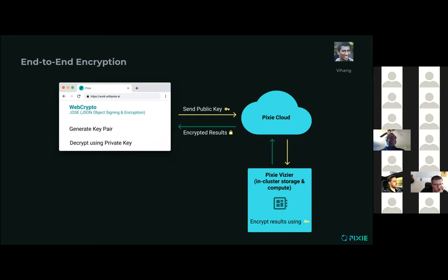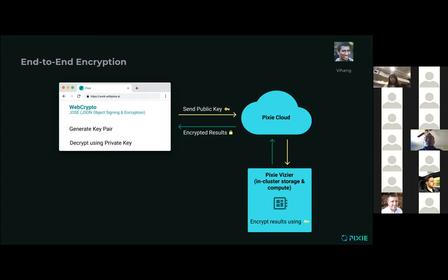That's a quick view on how end-to-end encryption works. This basically now gives you the additional guarantee that if you're using pass-through mode, your data is still encrypted even when it's proxying through Pixie Cloud — giving you the freedom of having full guarantee that no one can look at this data in the cloud, no matter what environment Pixie Cloud is running in. That's all I have — happy to take questions at the end.